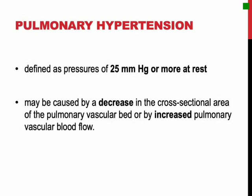The pulmonary circulation normally is one of low resistance, and the pulmonary blood pressures are only about one-eighth of the systemic pressures. Pulmonary hypertension is defined as pressures of 25 mmHg or more at rest. This may be caused by a decrease in the cross-sectional area of the pulmonary vascular bed, or less commonly by increased pulmonary vascular blood flow.